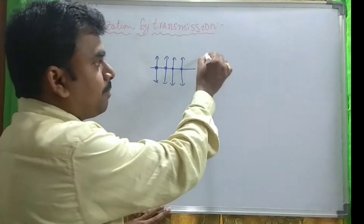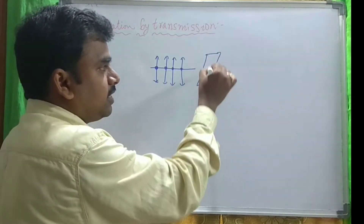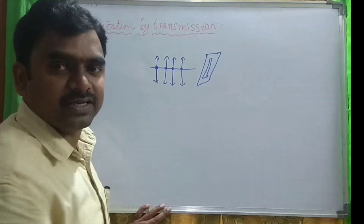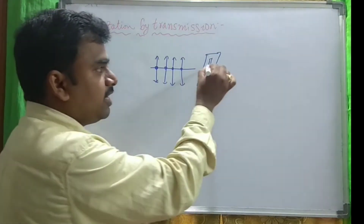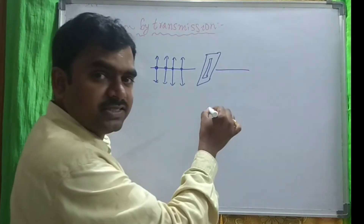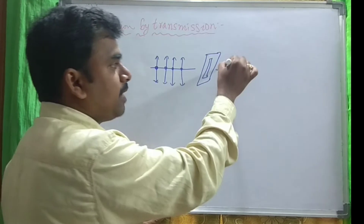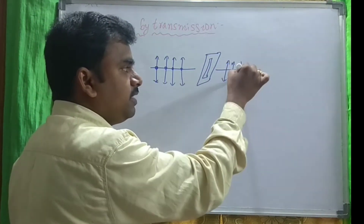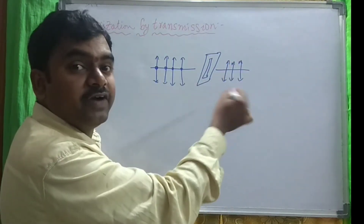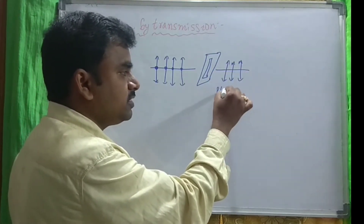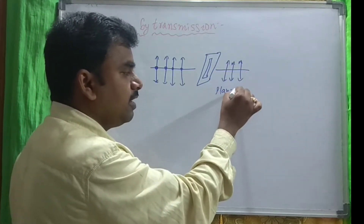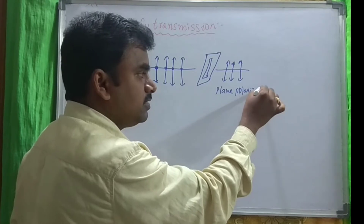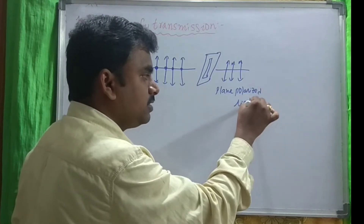So if we pass that unpolarized light to a polarizer, it allows only one type of vibrations — the vibrations that are parallel to that slit. So in the output, we are getting only one type of vibrations. This is called plane polarized light.